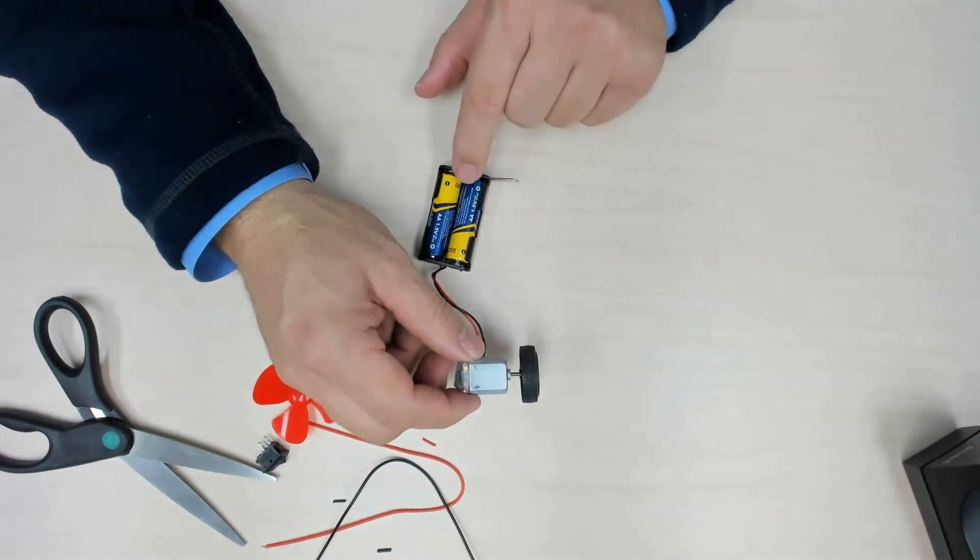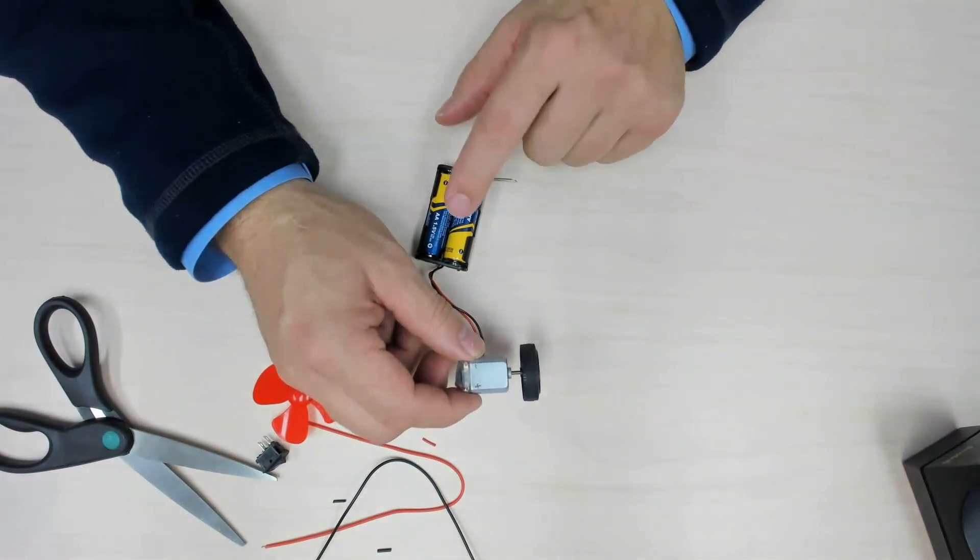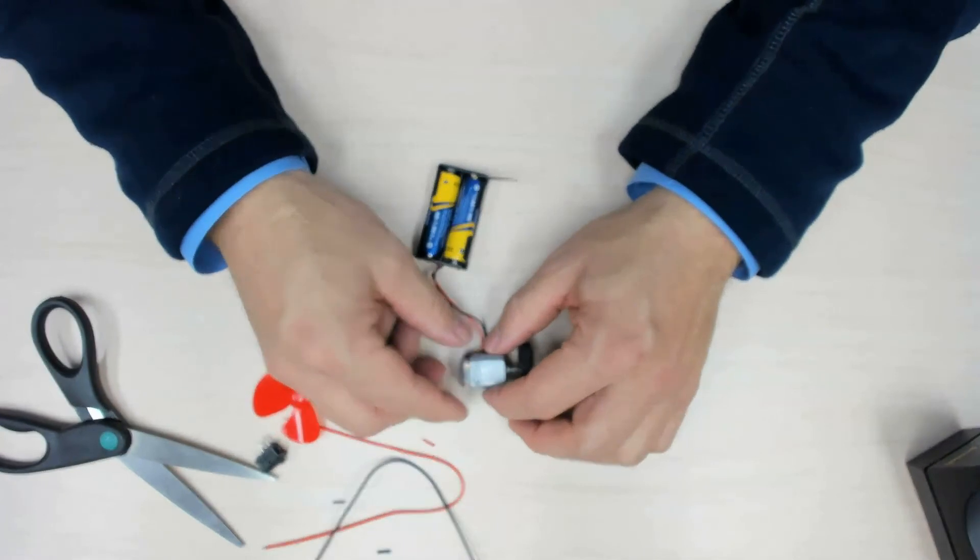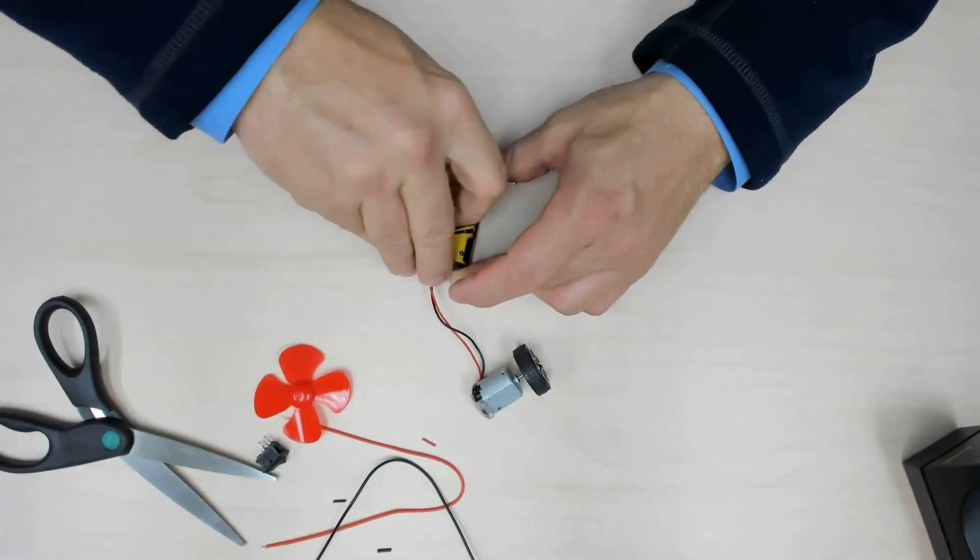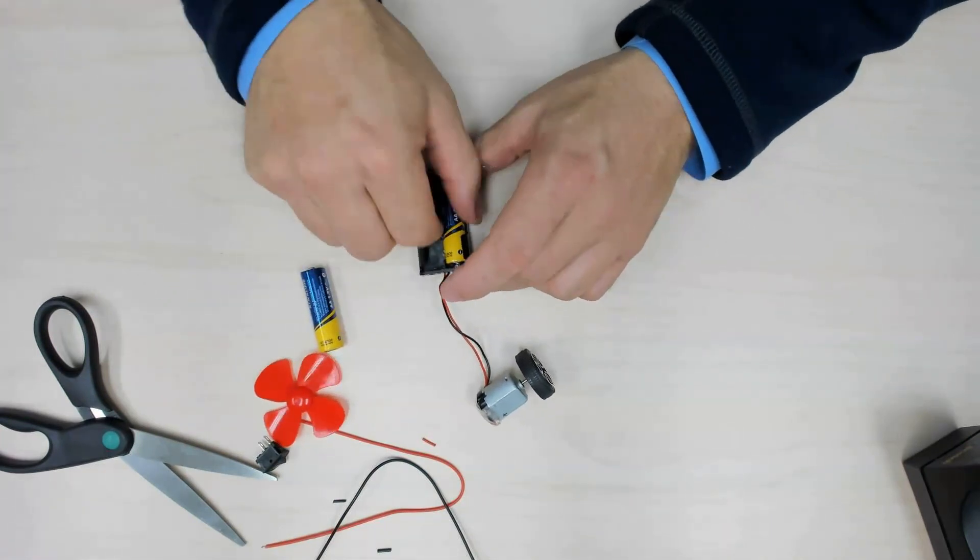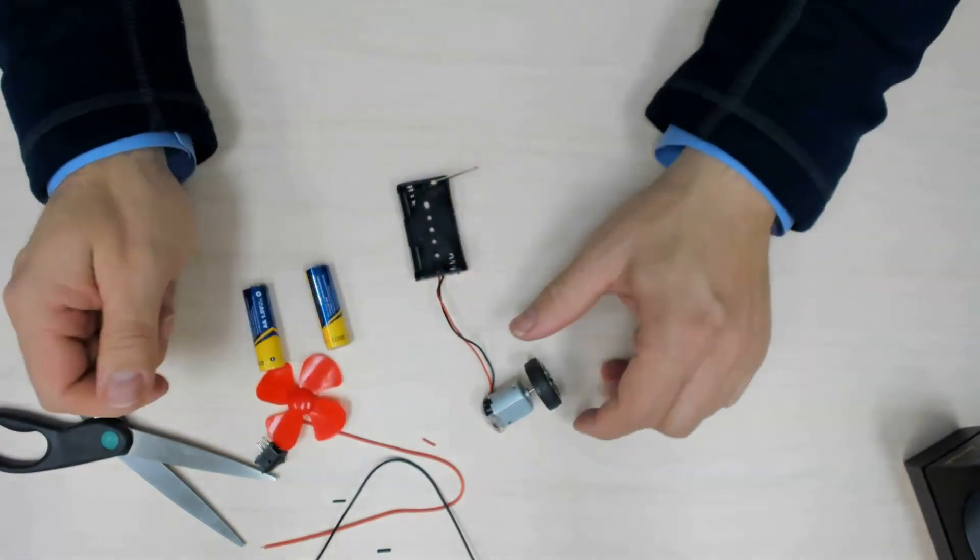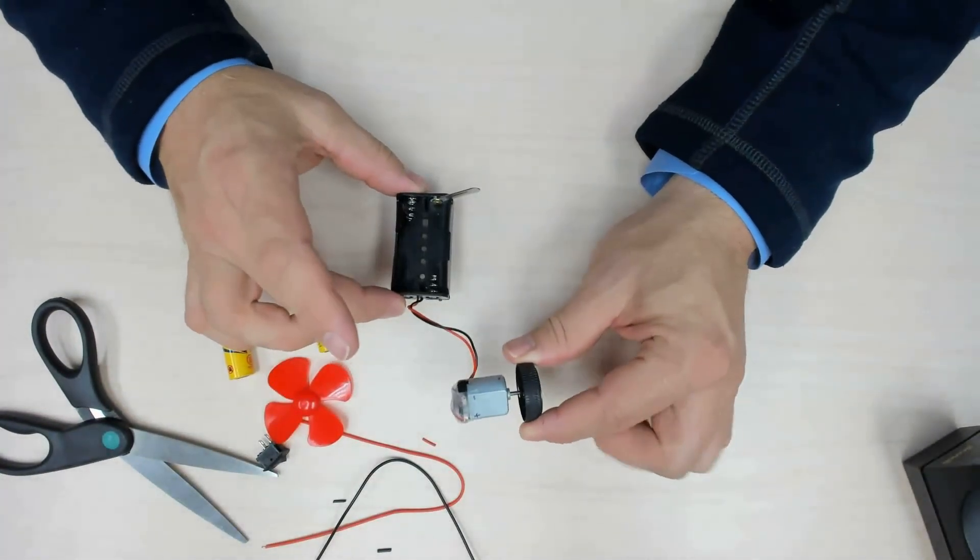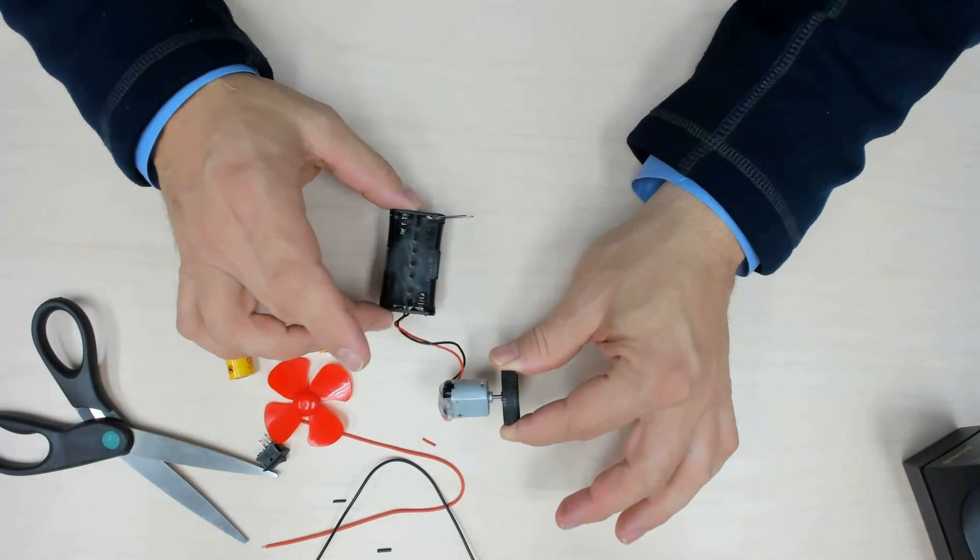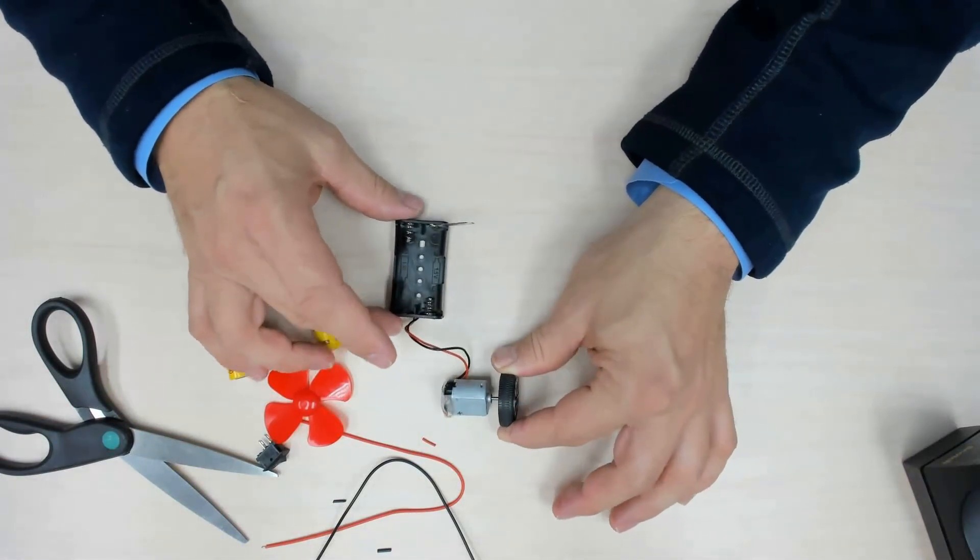Remember never leave your batteries in the connector because you could have an accidental short circuit. So when you're done, take out the batteries and store your circuit with no batteries. The next step is to install your electronic circuit into or onto your chassis.